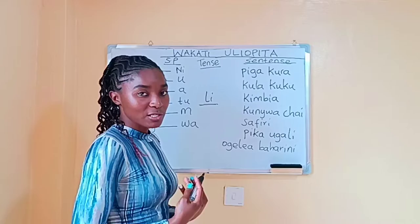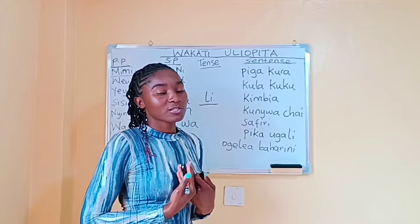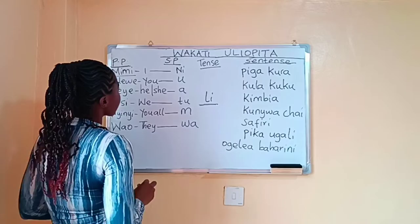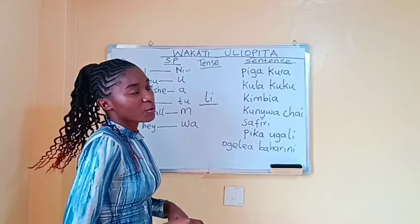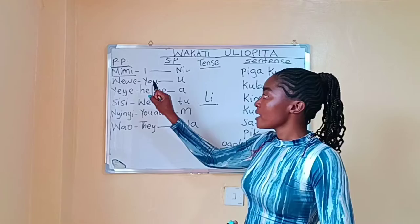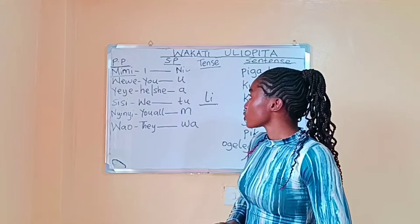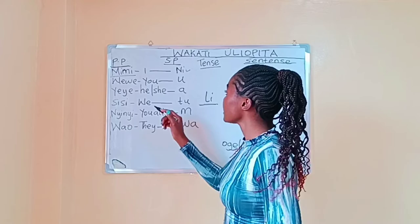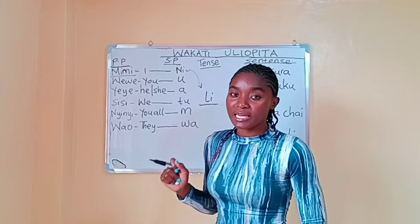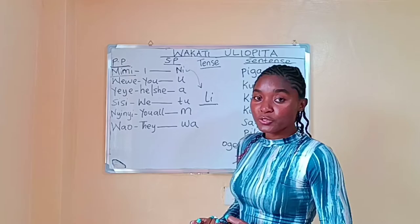The first one — we start with first person, which is 'Mimi.' You remember Mimi translates to 'I' in English. Mimi is always represented by 'ni.' So when you're forming a sentence, we start Mimi, ni. Our tense marker is 'li,' so the sentence begins with 'Mimi, nili.' Let's pick up one sentence: Mimi, nili, pigakura. So that means — what did I do?